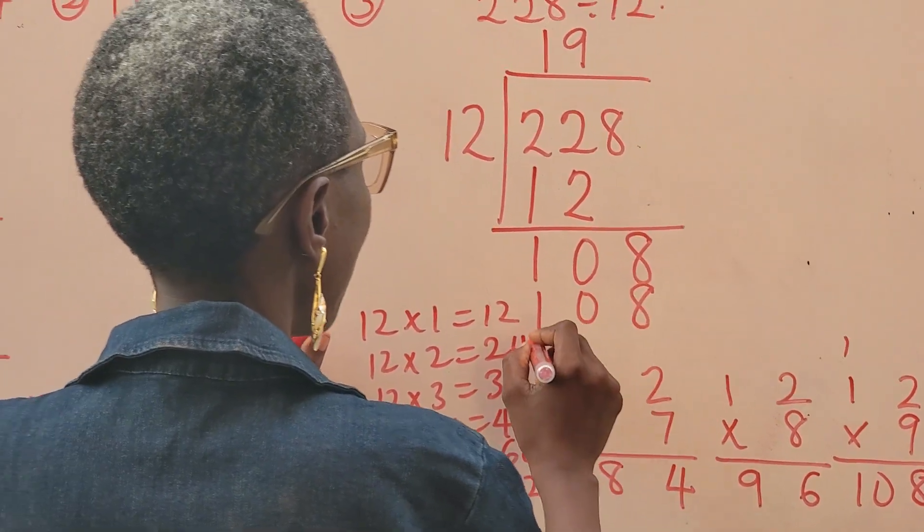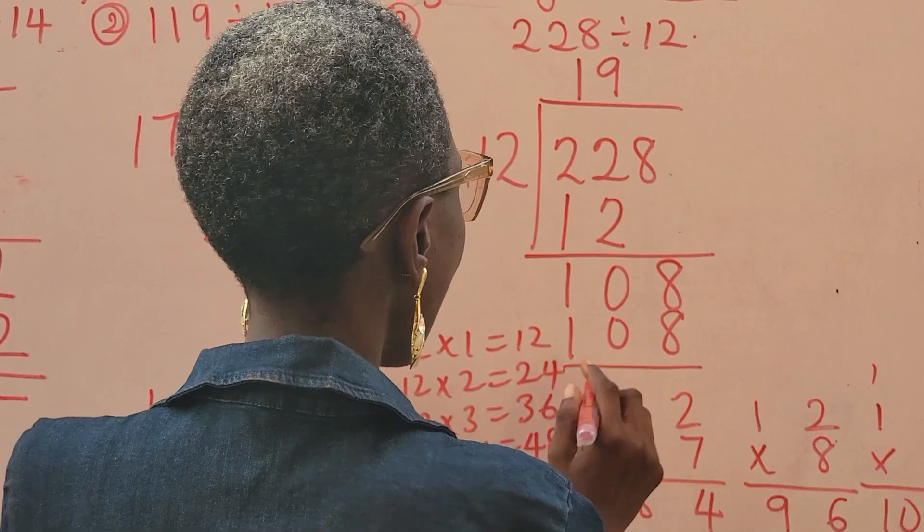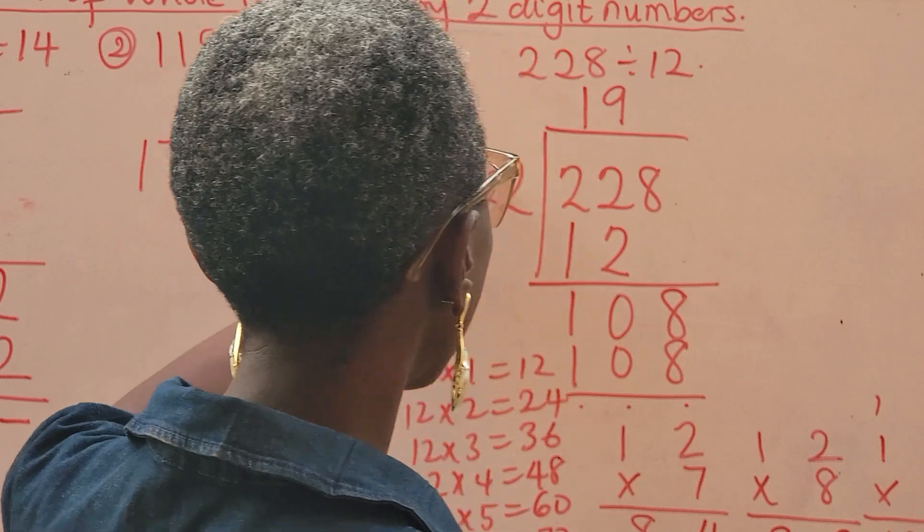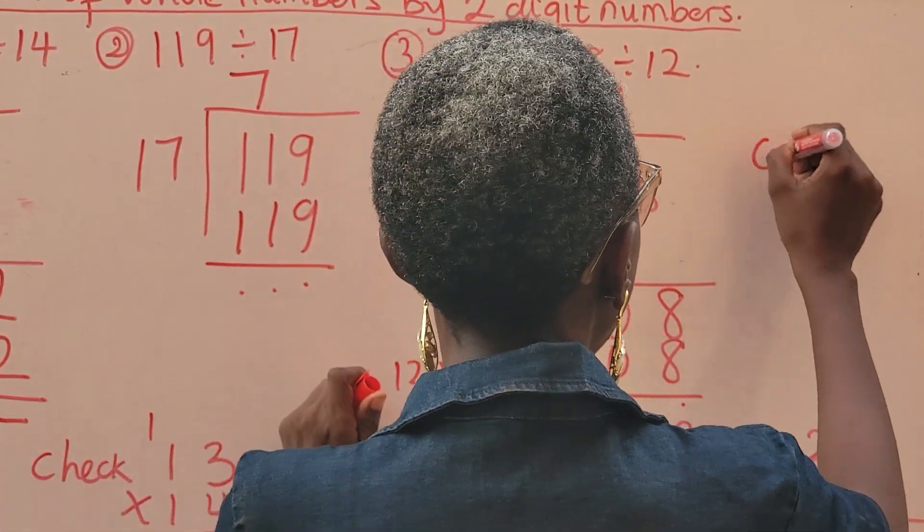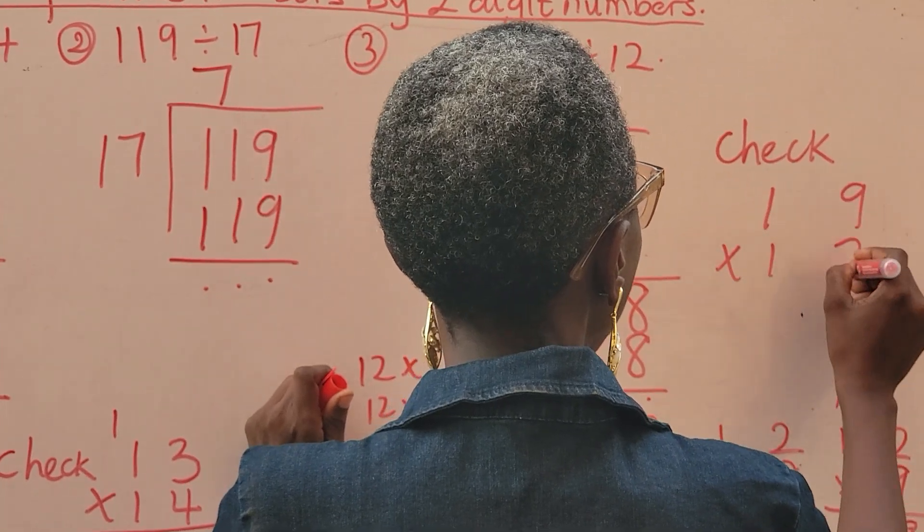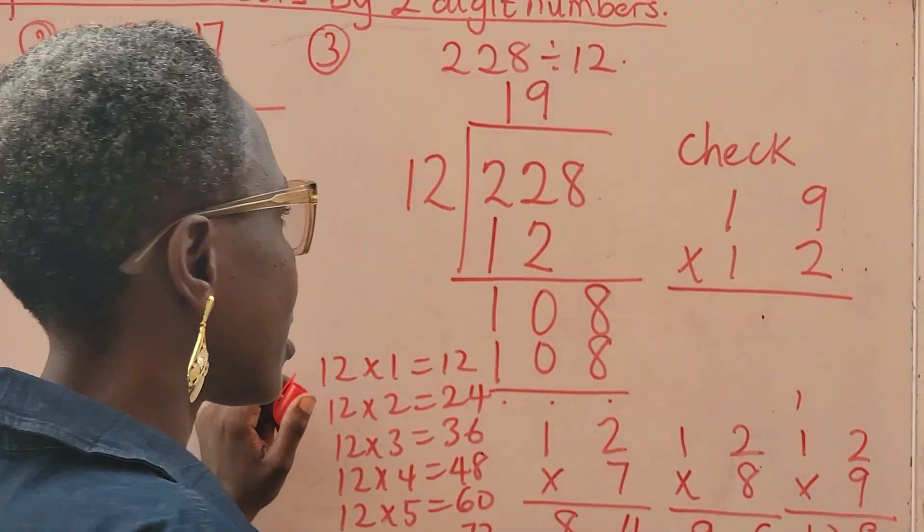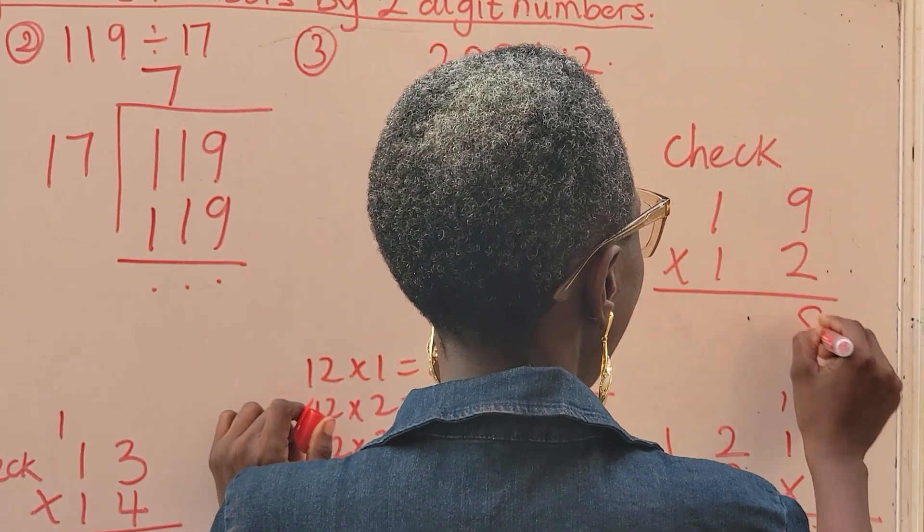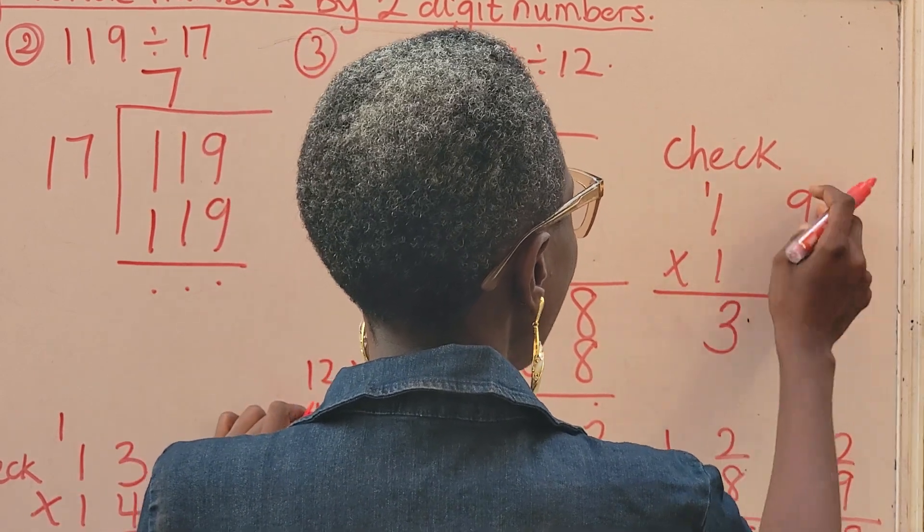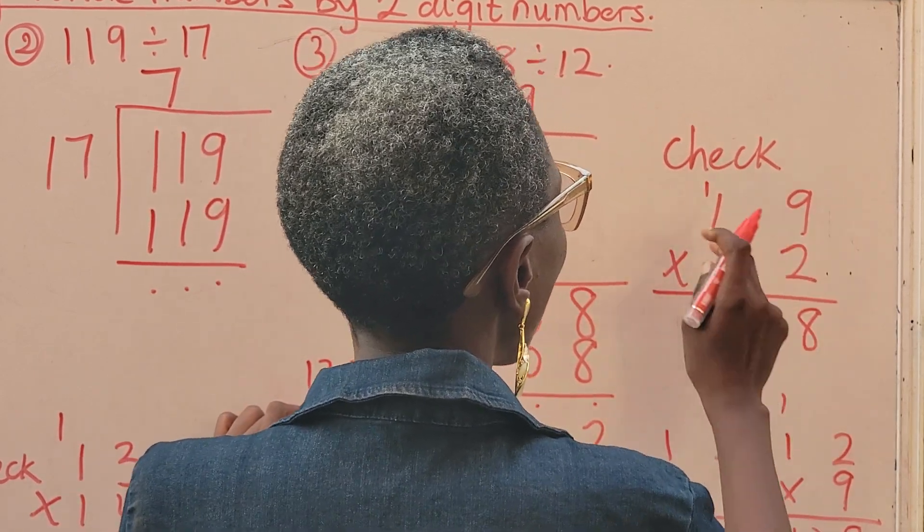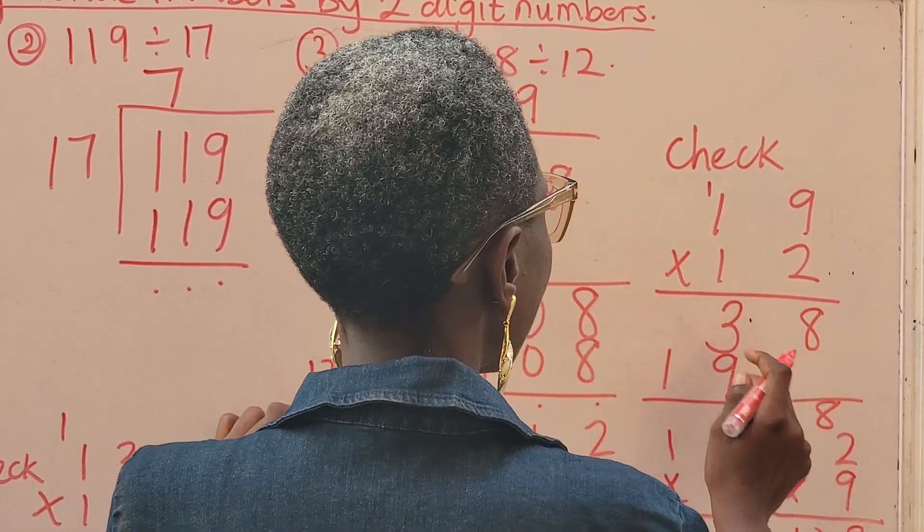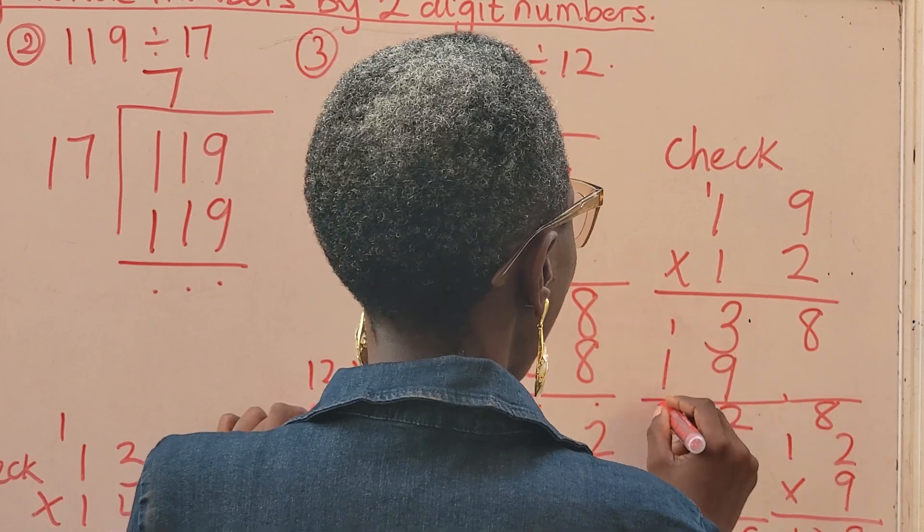So 108. By the time you subtract, you are left with nothing. It means 228 divided by 12 is 19. You can check. You can say 19 times 12. If your answer is 228, it means you are correct. 2 times 9 is 18. 2 times 1 is 2. Plus 1 is 3. 1 times 9 is 9. 1 times 1 is 1. Then we have it added 8. 3 plus 9 is 12. 1 plus 1 is 2. You can see my answer is 228.